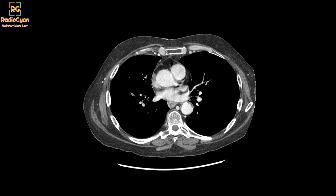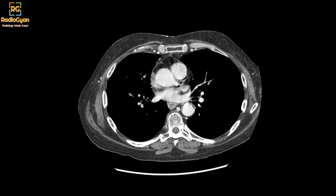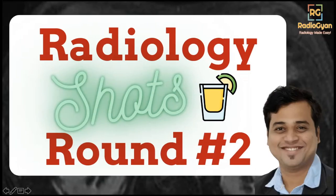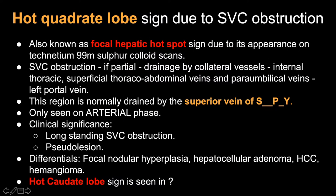Does anybody have any questions about the images? I will move on to these slides and we'll discuss this pathology in short. This is also known as focal hepatic hot spot due to its appearance on technetium sulfur colloid scans. What happens is that when there is long-standing and typically partial obstruction, there is some time for collaterals to form. The collaterals drain the SVC via the internal thoracic, superficial thoracoabdominal veins, and the paraumbilical veins into the left portal vein. The contrast we inject goes into the left portal vein and gives that intense enhancement in the quadrate lobe in the early arterial phase. This sign is seen in the early arterial phase.